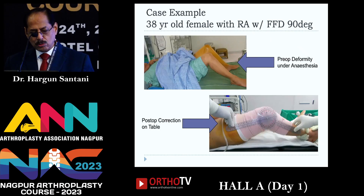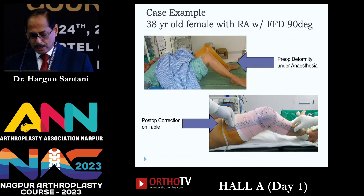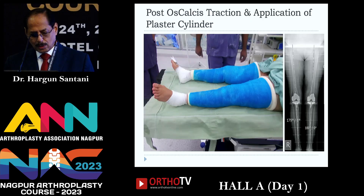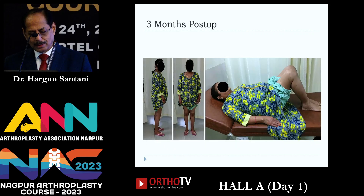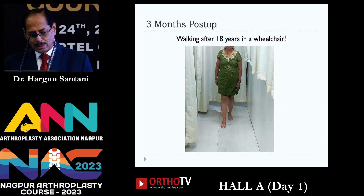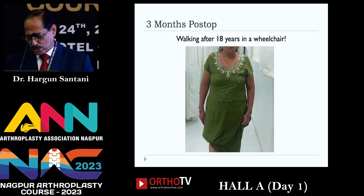This is a lady who had been in a wheelchair for 18 years. Her deformity was nearly 90 degrees after anesthesia, and after surgery we couldn't correct it fully. So I put her on skeletal traction for a few days to stretch out the hamstrings, then put her in a plaster cylinder — this in no way affects their ultimate flexion. These are her long-leg films and pre- and post-op X-rays. Her flexion is nearly 120 degrees and this is her gait after 3 months — a lady who had not walked for 18 years.